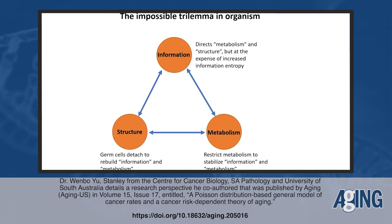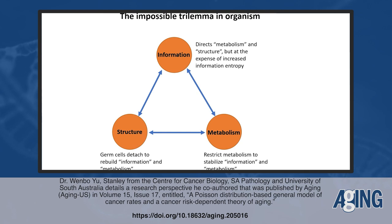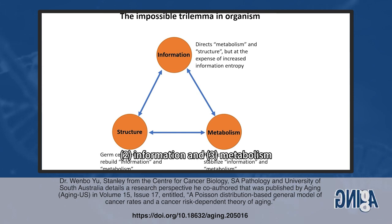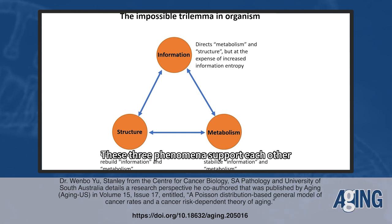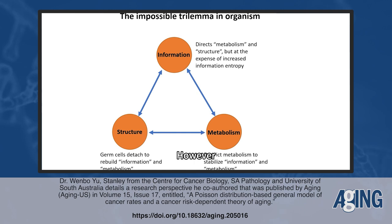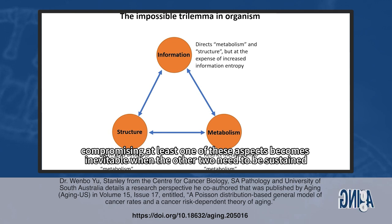We have further advanced our theory by introducing the concept of the impossible trilemma, which states that it is impossible to have all three of the following system components constant at the same time: first, structure; second, information; and third, metabolism. These three phenomena support each other. However, compromising at least one of these aspects becomes inevitable when the other two need to be sustained.